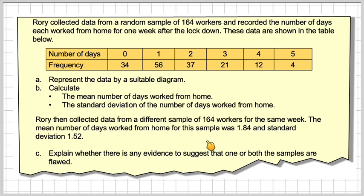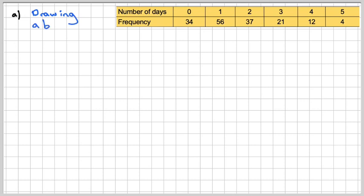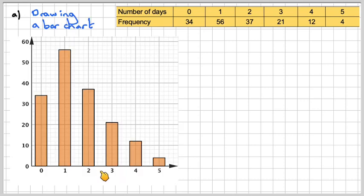This part we'll look at a bit later in the question. Here's a table. The most suitable thing is to draw a bar chart. So here we have the bar chart. The heights of the bars must match up to the frequencies. As it's a bar chart, they should not be joined together because the data is discrete.